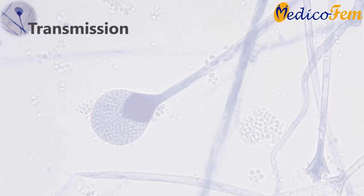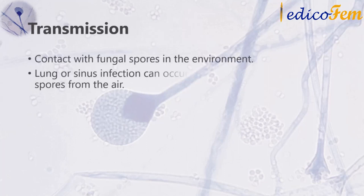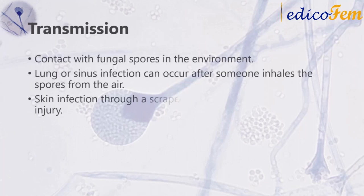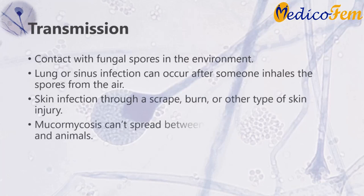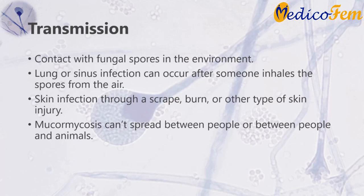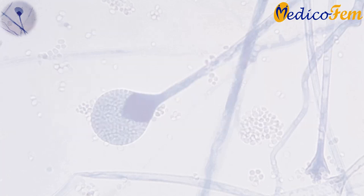Mode of transmission: People get mucormycosis through contact with fungal spores in the environment. The lung or sinus forms can occur after someone inhales spores from the air. A skin infection can occur after the fungus enters the skin through a scrape, burn, or other type of skin injury. Mucormycosis cannot spread between people or between people and animals.